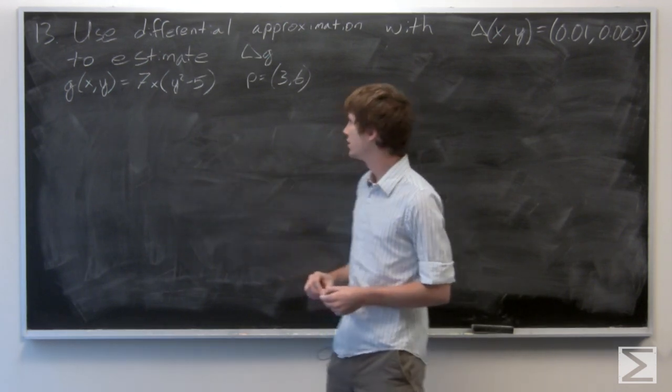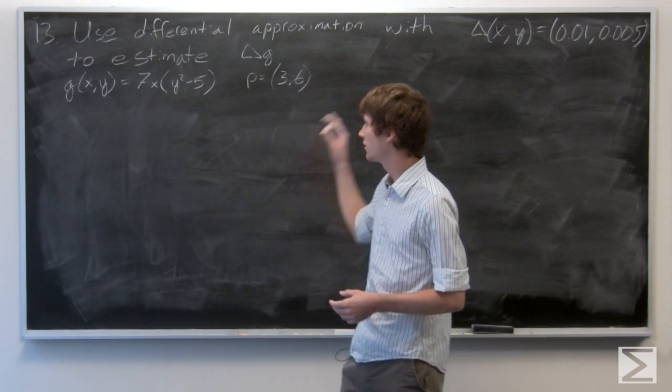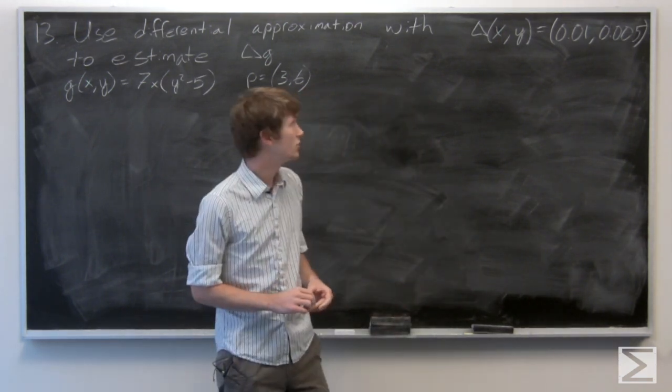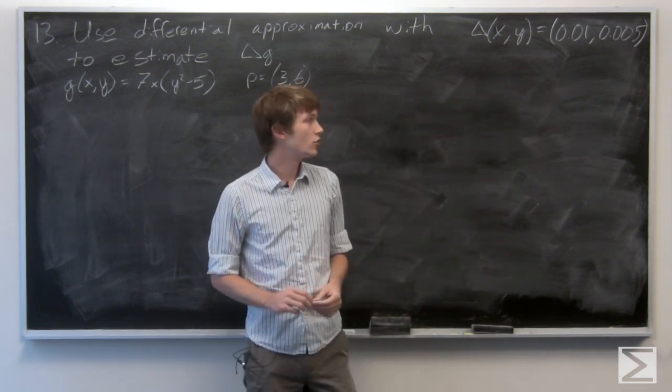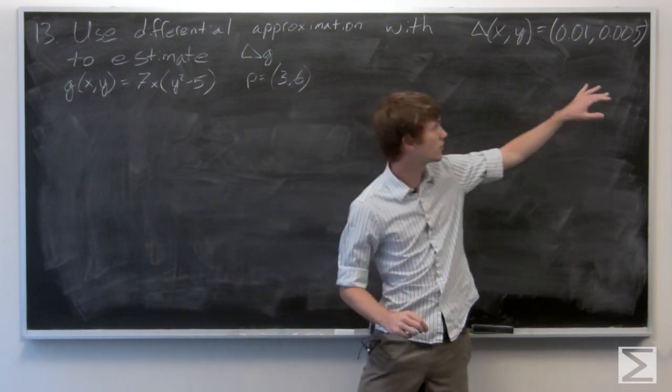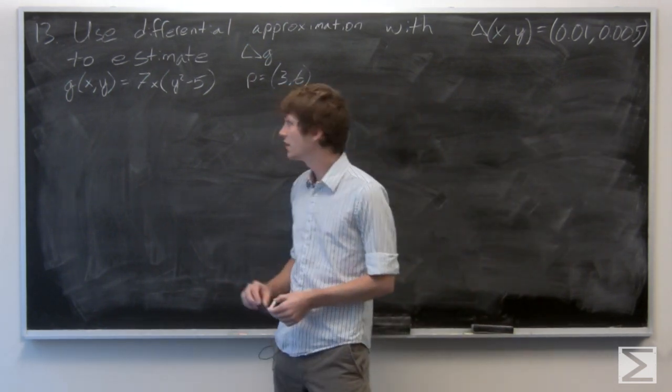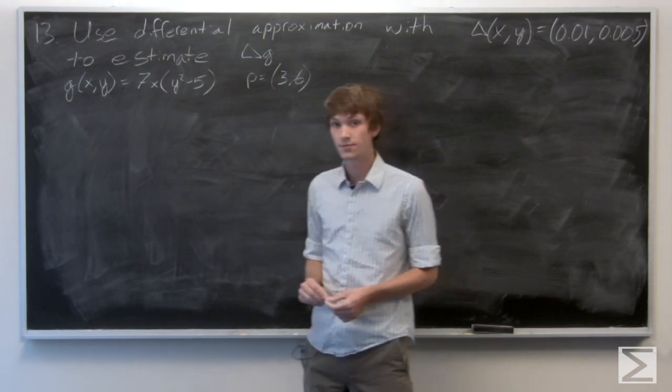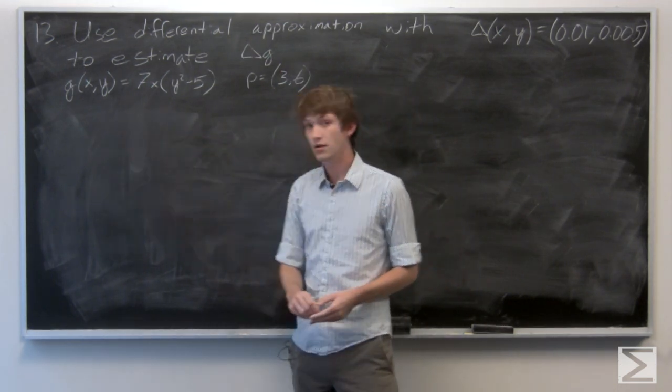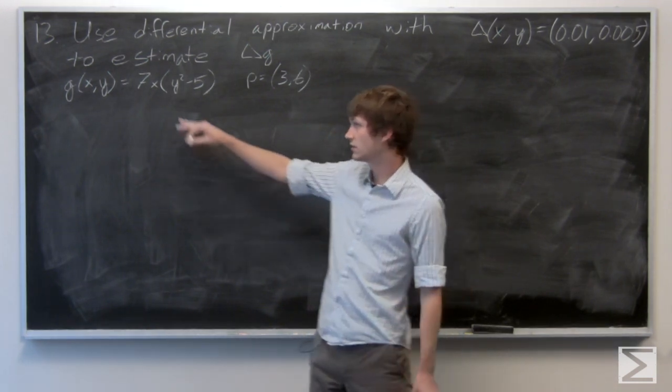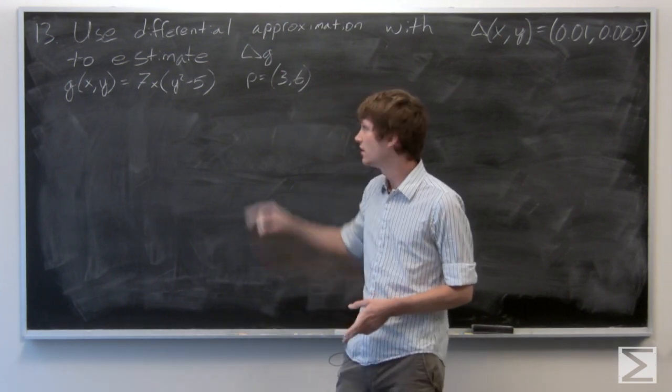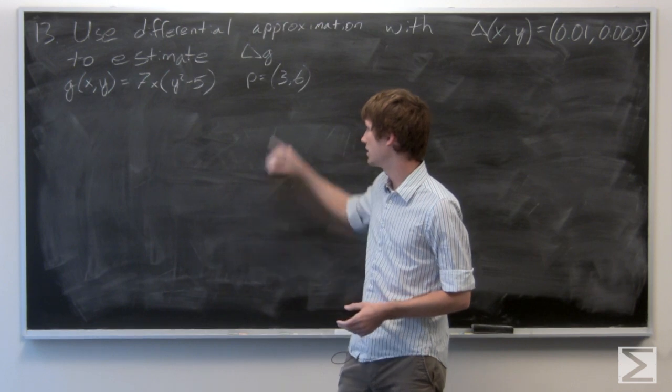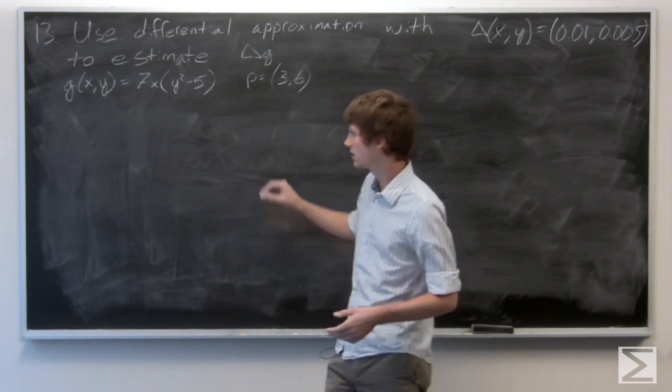OK. In this problem, we're asked to use differential approximation with delta x, y equal to 0.01, 0.005 to estimate delta g. And we're given that our function g of x, y is equal to 7x times the quantity y squared minus 5. And the point p is equal to 3, 6.